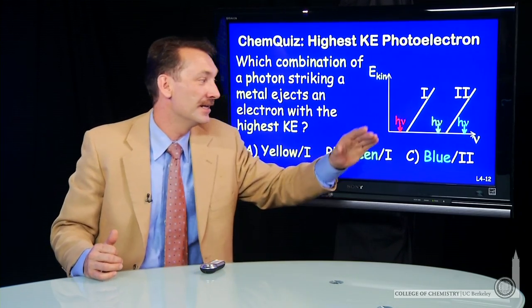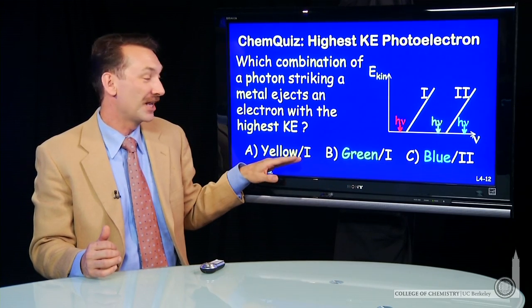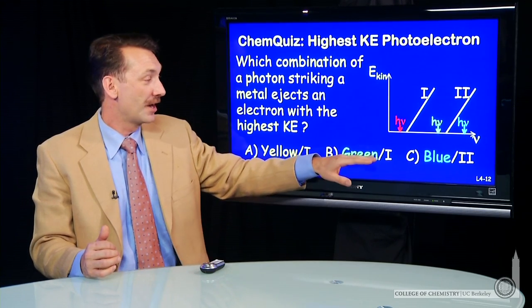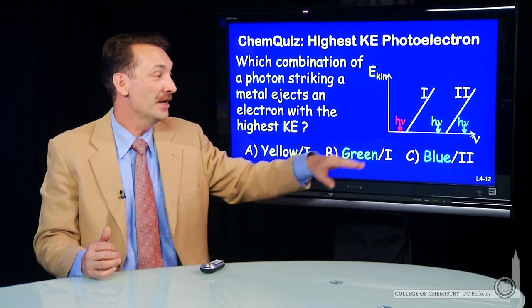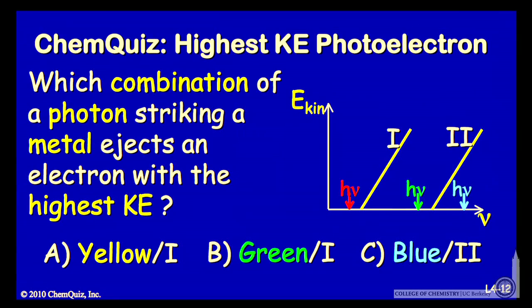I have two metals represented and several different photon energies. Is it a yellow photon striking metal one, a green photon striking metal one, or a blue photon striking metal number two? Think about that for a second and make a selection.